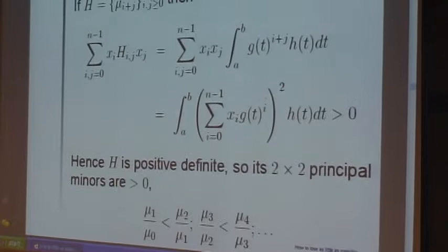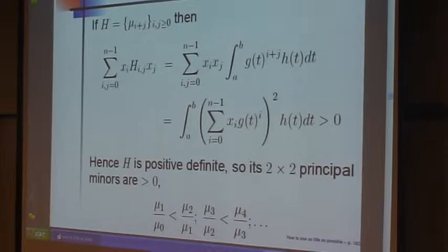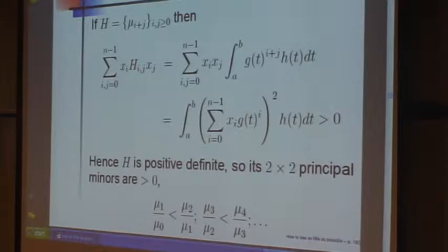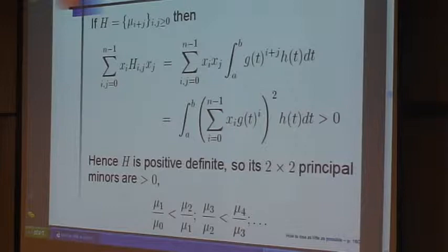And so since H is positive definite, its 2 by 2 principal minors are positive. And so you get that chain of inequalities up there. That's not quite enough to prove what you want because we're skipping some things.